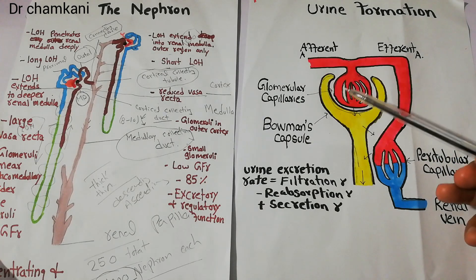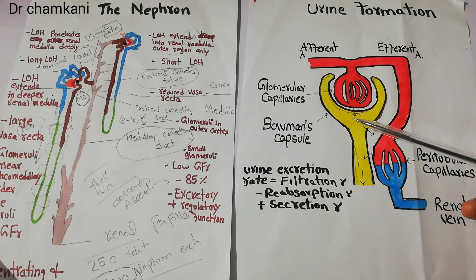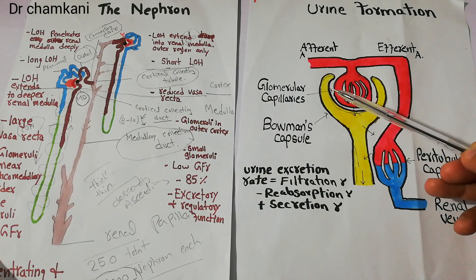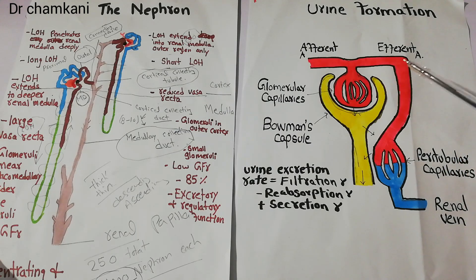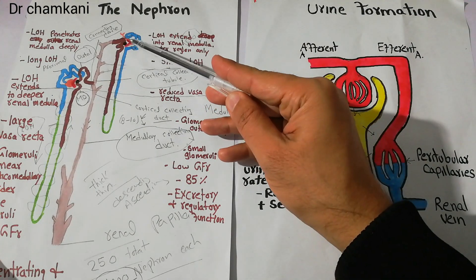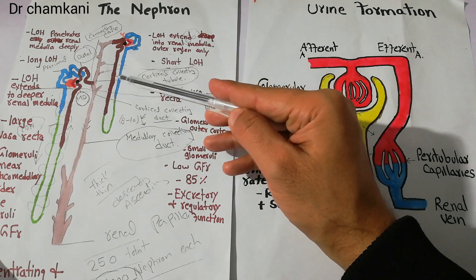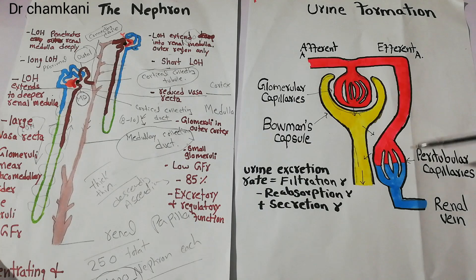Due to the pressure in the glomerulus the blood is filtered and the filtrate enters into the Bowman's capsule. The remaining blood then goes back through the efferent arteriole and makes another capillary network known as the peritubular capillaries, which surround the tubules. Finally the peritubular capillaries enter the venous system and ultimately drain into the renal vein.